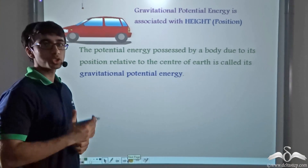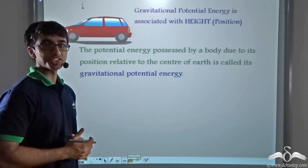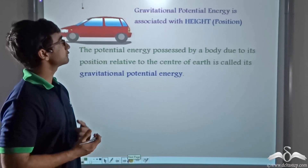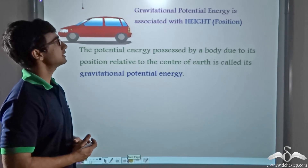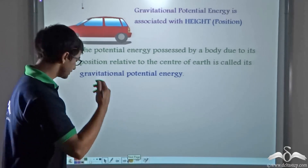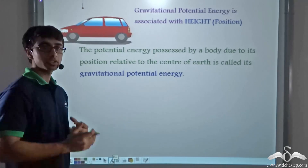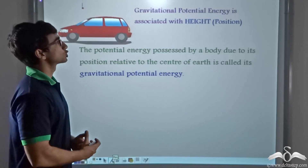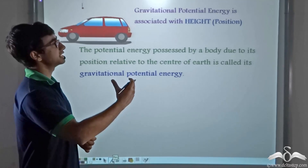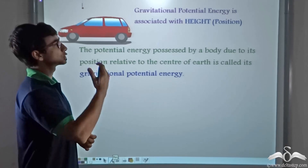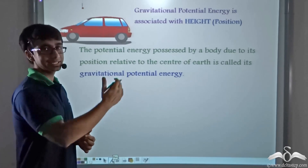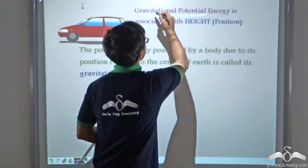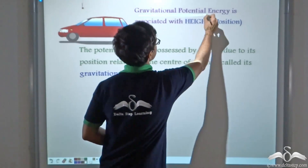So we found out about two kinds of potential energy. The first kind was associated with the height of a particular object. That potential energy which is associated with height is known as gravitational potential energy.